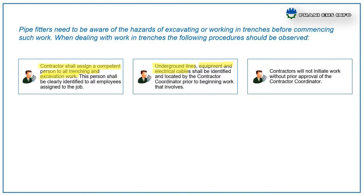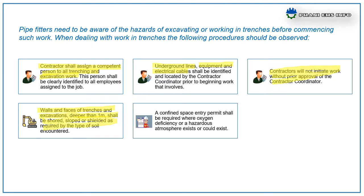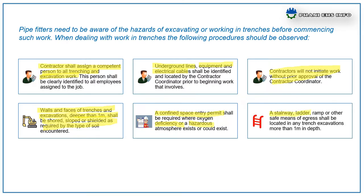Contractors will not initiate work without prior approval of the contract coordinator. Walls and faces of trenches and excavations deeper than one meter shall be shored, sloped, and shielded as required by the type of soil encountered. A confined space entry permit shall be required when oxygen deficiency or hazardous atmospheres exist or could exist. A stairway, ladder, ramp, or other safe means of egress shall be located in any trench excavation more than one meter in depth.